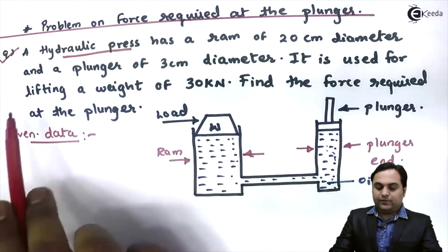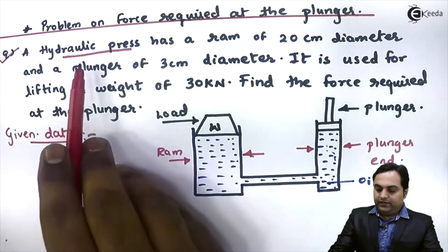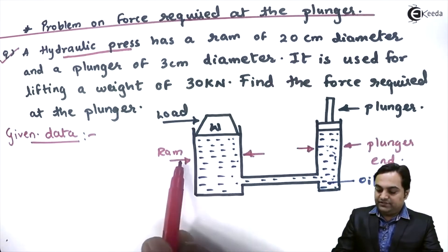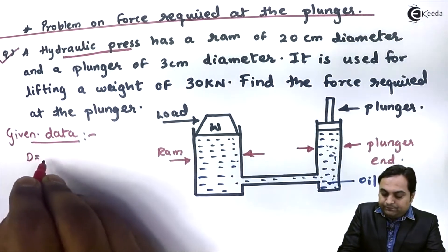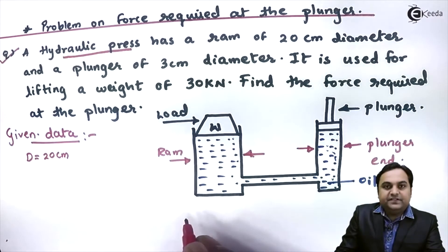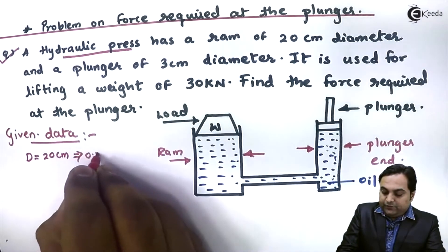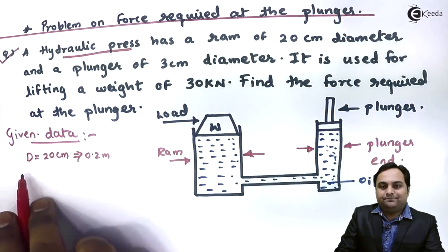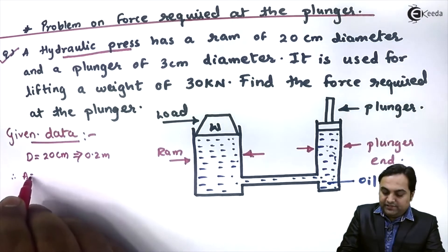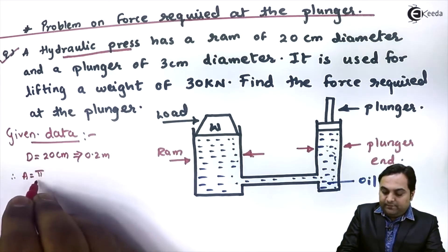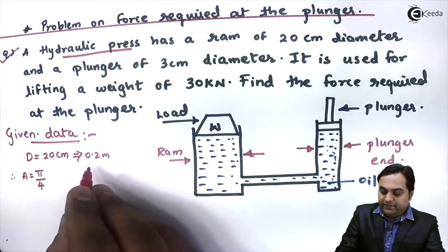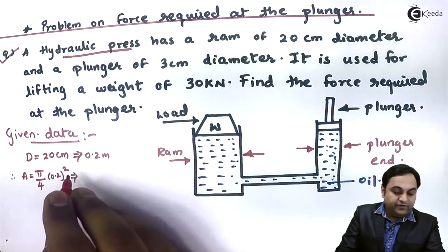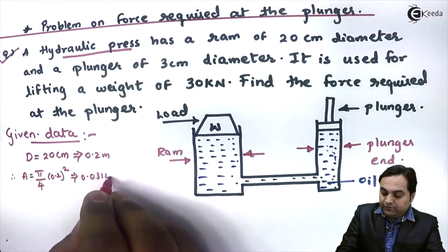Now I will write the given data. The hydraulic press has a ram of 20 centimeter diameter, so diameter of ram D = 20 cm = 0.2 m. The area of ram: A = π/4 × D² = π/4 × (0.2)² = 0.0314 m².